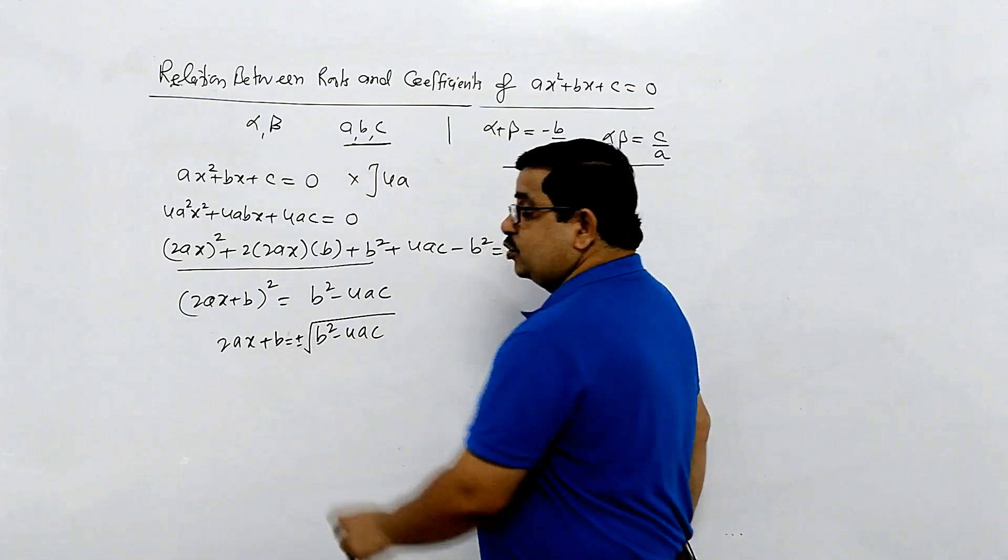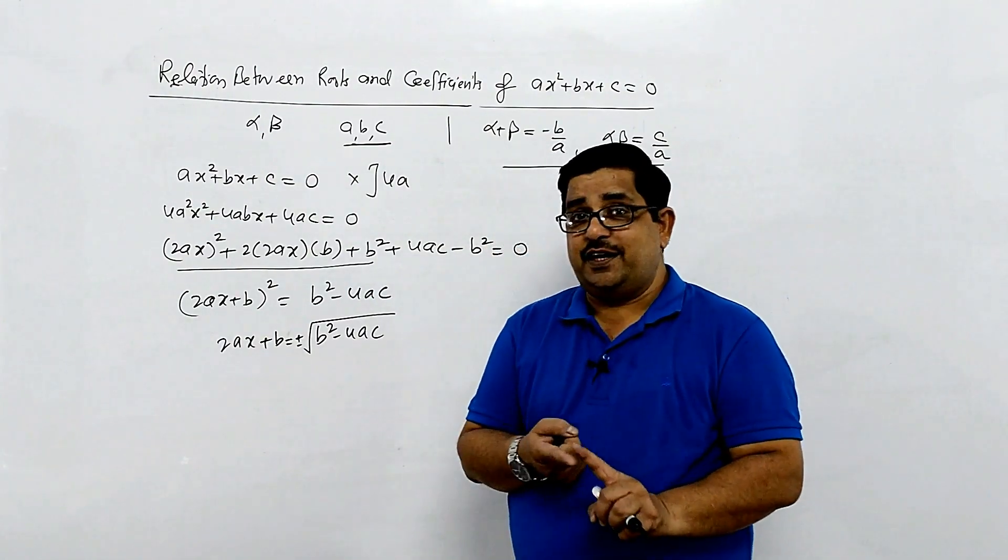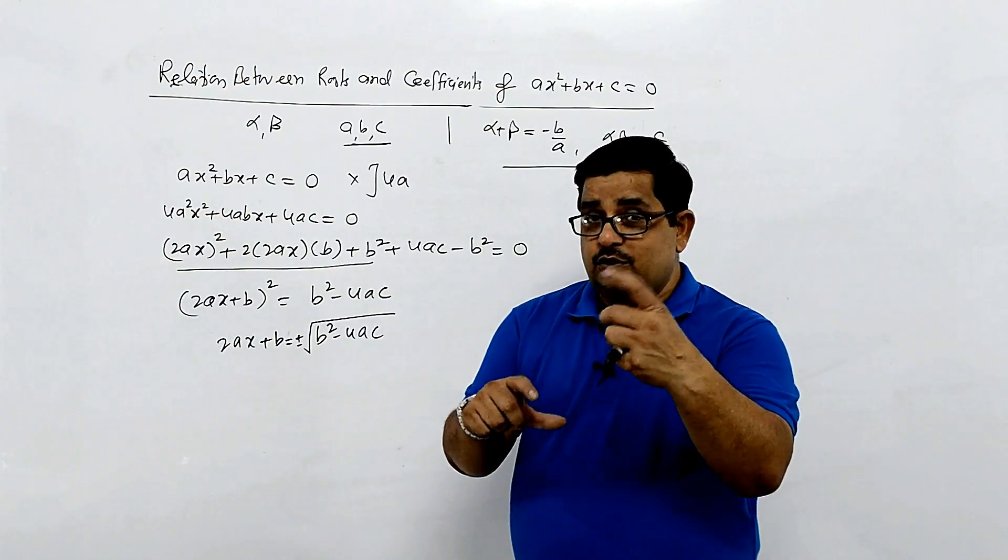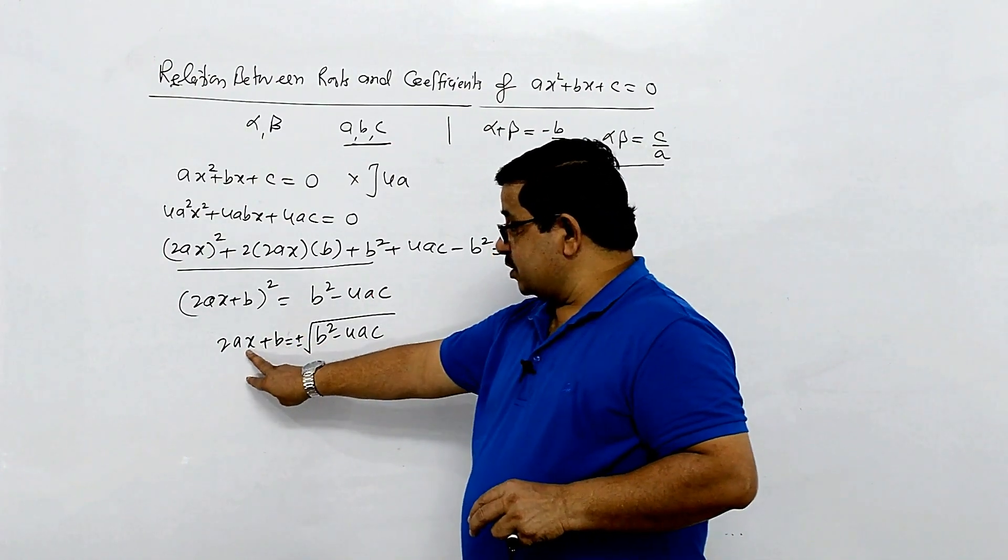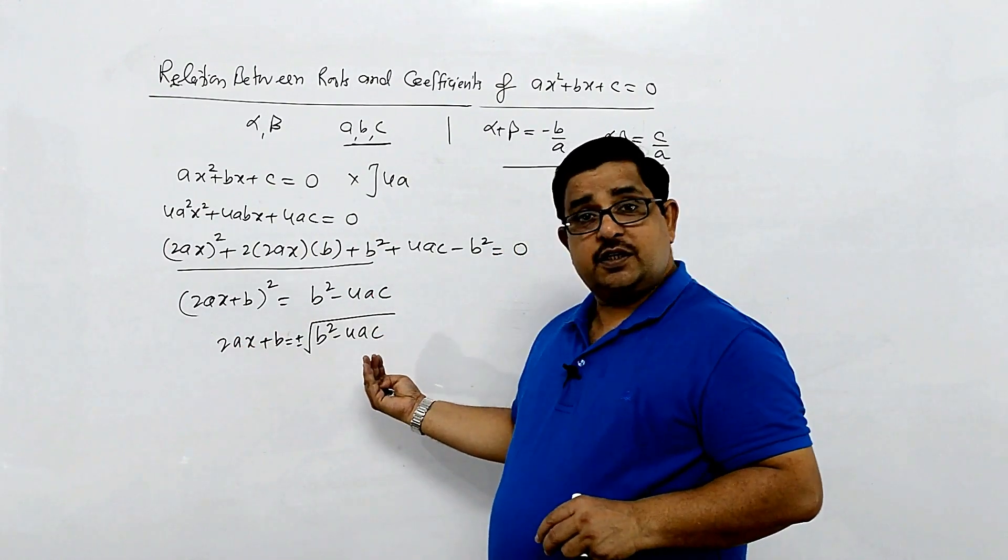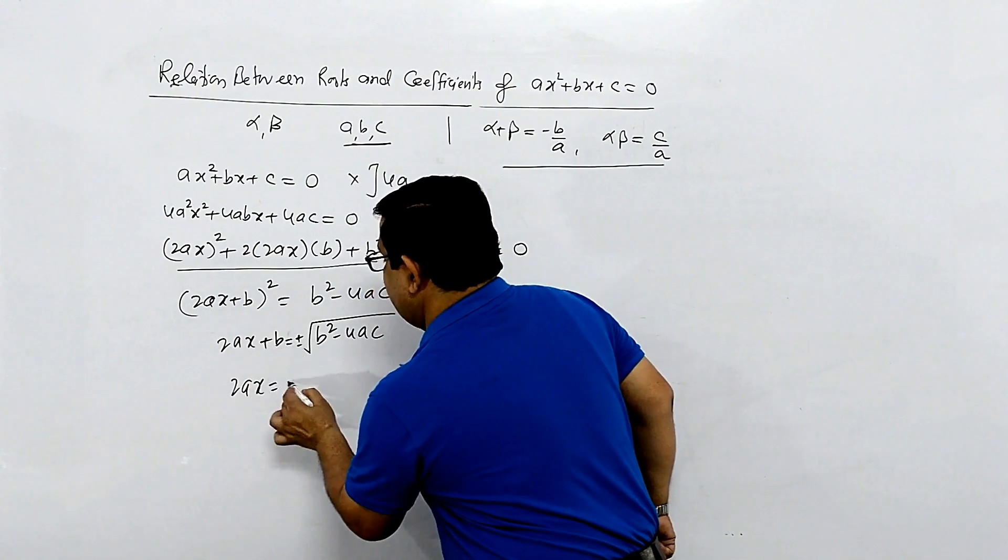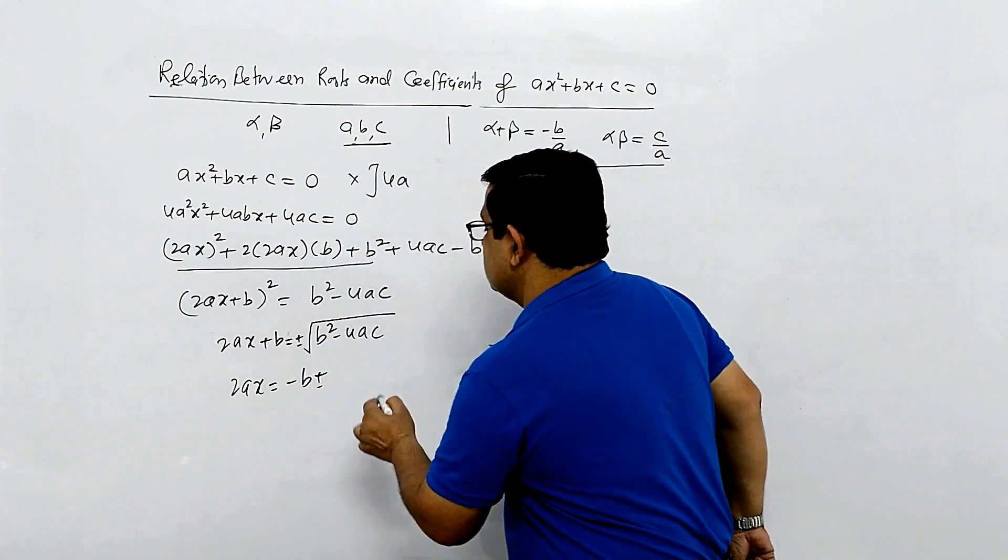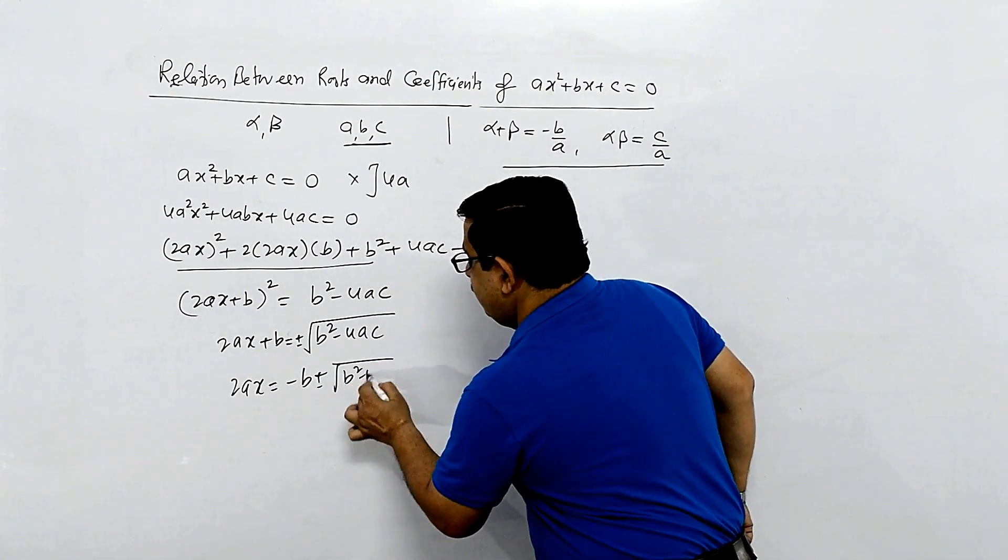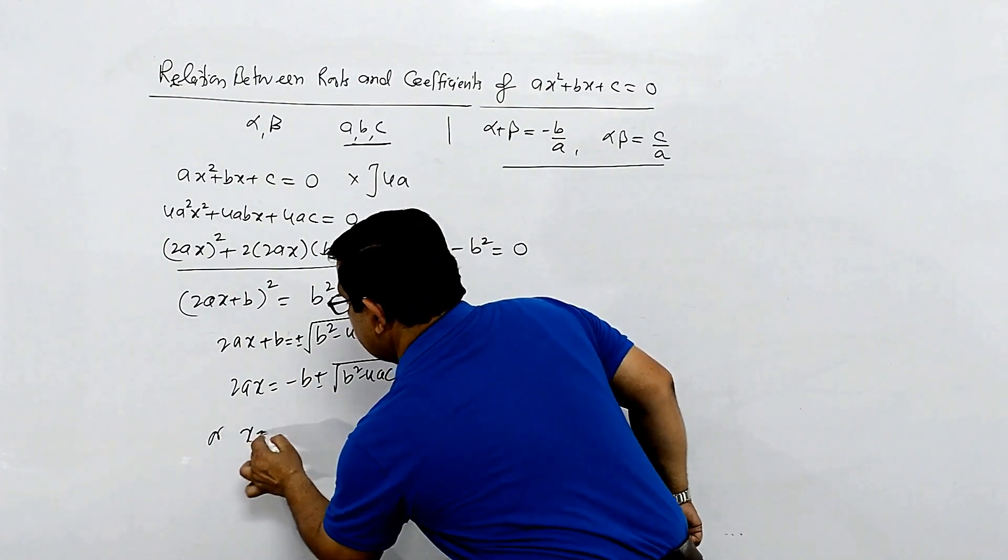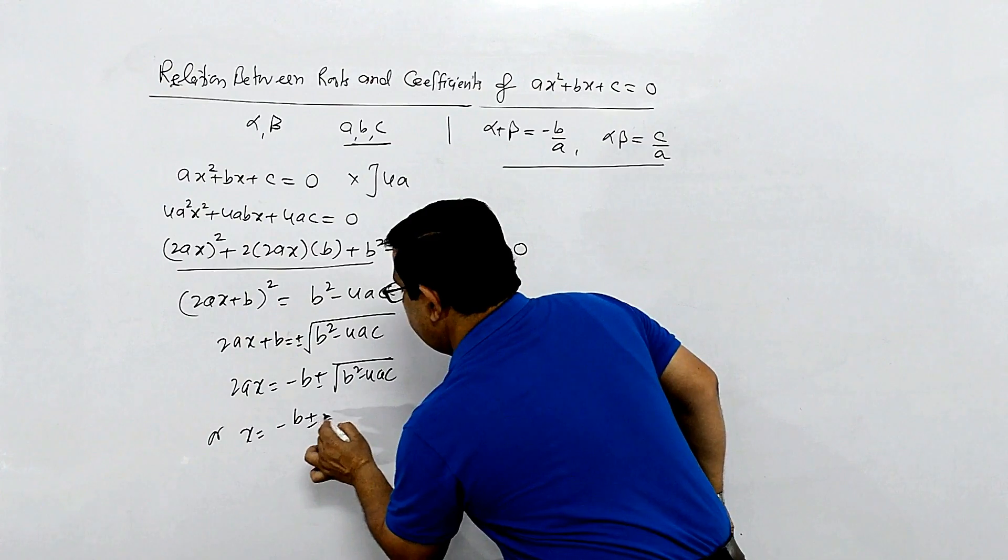The roots which are the values of x become the two values alpha and beta. Shifting the remaining portion, we get 2ax equals minus b plus minus square root of b square minus 4ac. So x equals minus b plus minus square root of b square minus 4ac divided by 2a.